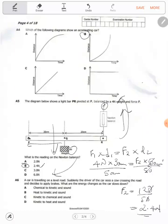Question six: a car is traveling on a level road. Suddenly the driver of the car sees a cow crossing the road and decides to apply the brakes. What are the energy changes as the car slows down?